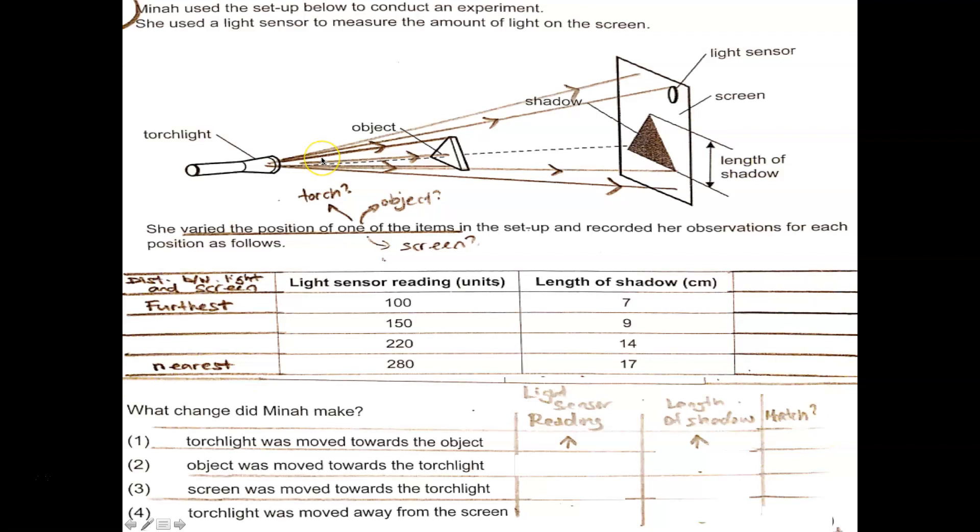And the light intensity will go to zero. But the length of the shadow will actually increase as the object moves nearer to the torchlight. This part, well, it matches, but this does not match. So therefore, two must be wrong.